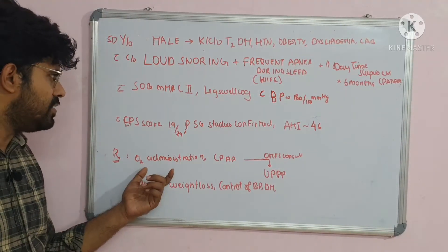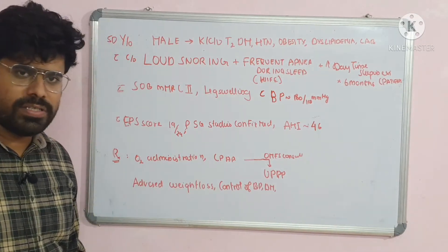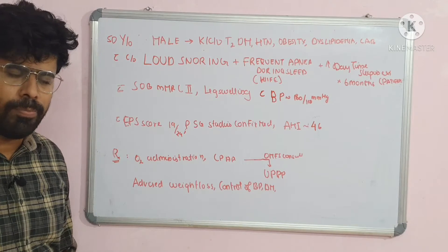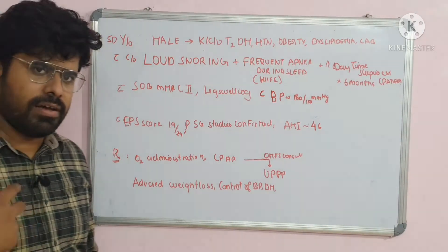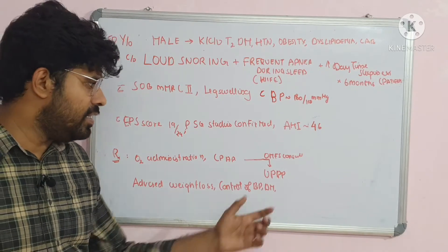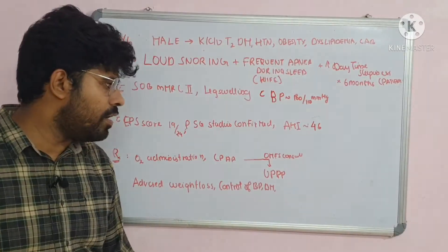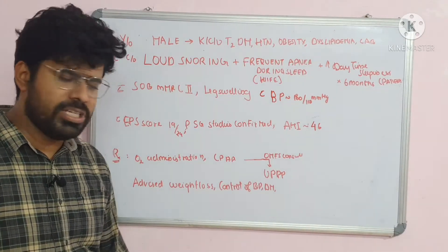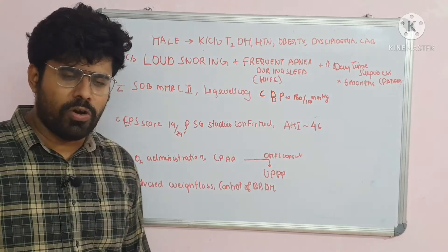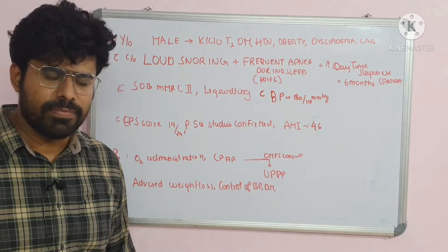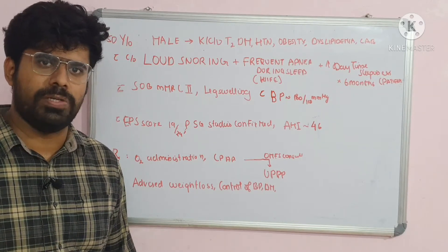The patient was given oxygen, some diuretics, and was started on CPAP. Once on CPAP, his symptoms improved but he developed claustrophobia to CPAP and was asking for some other treatment. Then an OMF consult was obtained and the patient was started on uvulopalatopharyngoplasty. Once done, the patient was discharged with advice for weight loss and adequate control of blood pressure and diabetes mellitus. This is the stereotype case of obstructive sleep apnea.